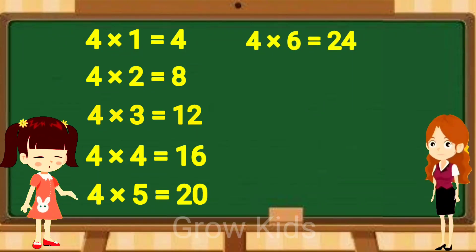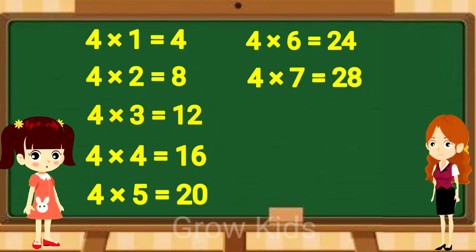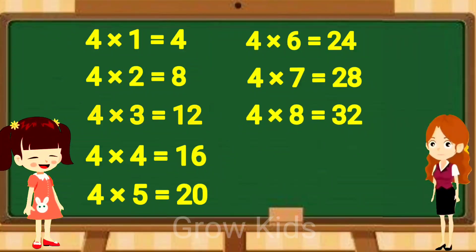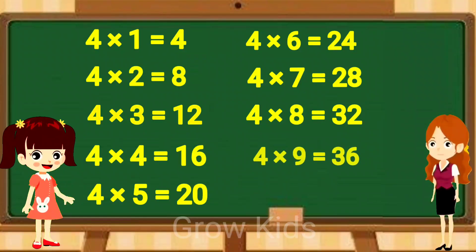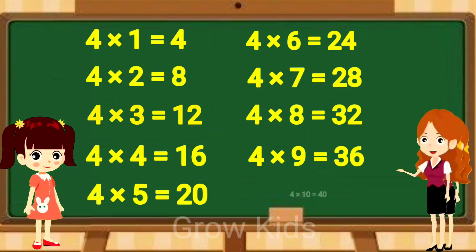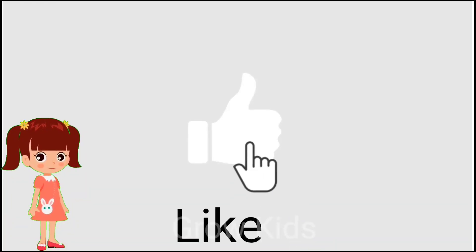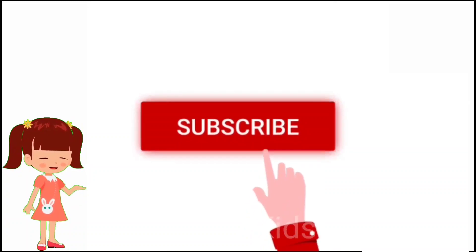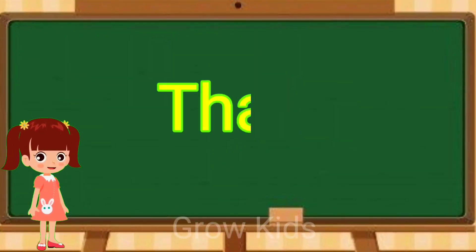Four sevens are twenty-eight. Four eights are thirty-two. Four nines are thirty-six. Four tens are forty. And do not subscribe to my channel. Thank you. Bye-bye.